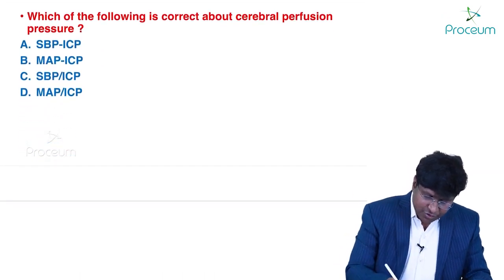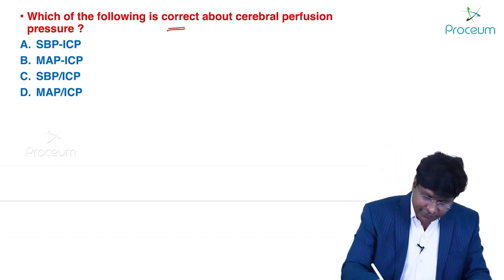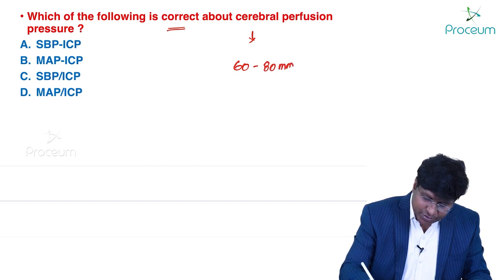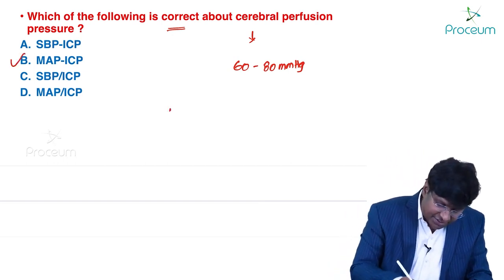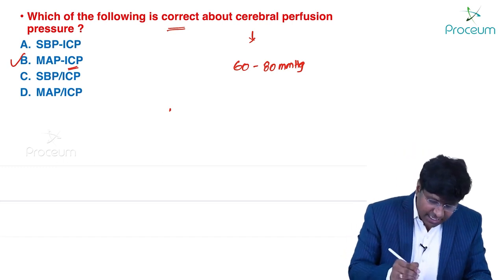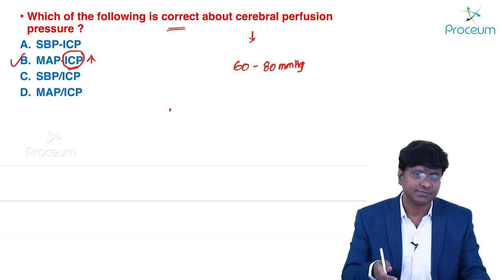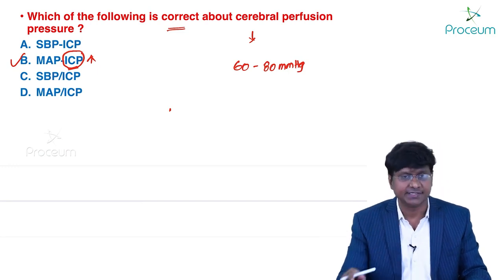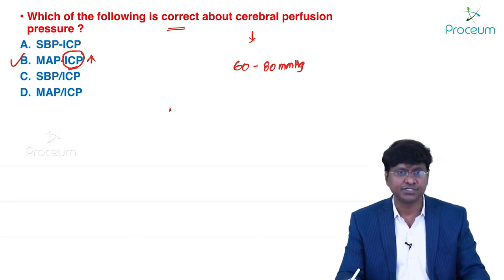Which statement about cerebral perfusion pressure is correct? Normal cerebral perfusion pressure is 60 to 80 mmHg. The formula is: CPP = Mean Arterial Pressure minus Intracranial Pressure. If intracranial pressure increases, cerebral perfusion pressure decreases — which is why raised ICP is dangerous. The formula is MAP minus ICP equals CPP.